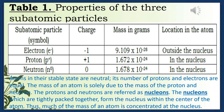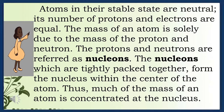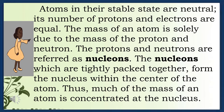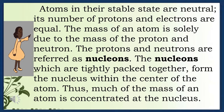Atoms in their stable state are neutral — their number of protons and electrons are equal. The mass of an atom is solely due to the mass of the proton and neutron. The protons and neutrons are referred to as nucleons, which are tightly packed together to form the nucleus at the center of the atom. Thus, much of the mass of an atom is concentrated at the nucleus.